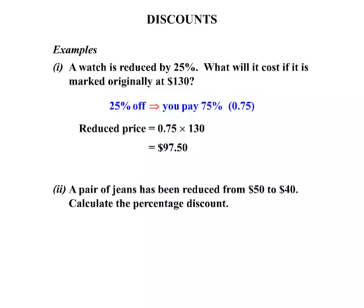Example 2. A pair of jeans has been reduced from $50 to $40. And we're asked to calculate the percentage discount. Well, let's consider the actual discount firstly. It's gone from $50 down to $40. So that's a reduction or discount of $10.